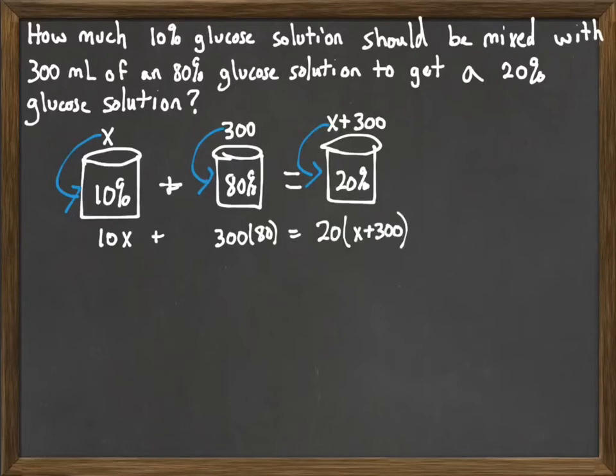So, then we set about trying to solve this equation. So, a little bit of simplifying to do. We can do 300 times 80, which will give me 24,000. So, I have 10X plus 24,000. And then, on the other side, distributing through by 20, I have 20X. 20 times 300 will be 6,000.